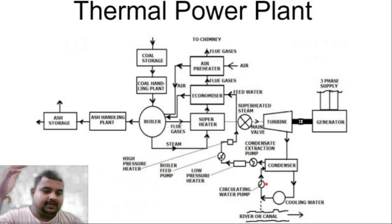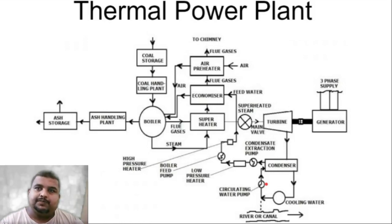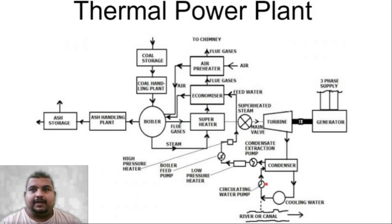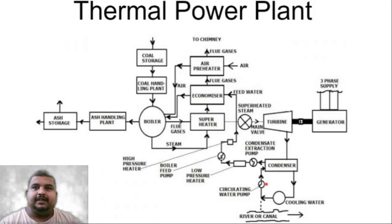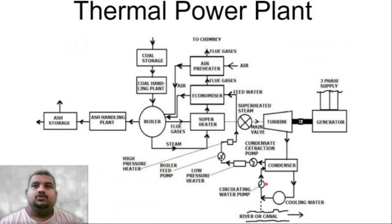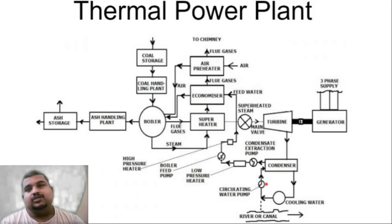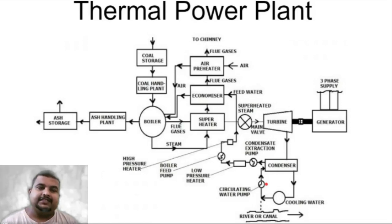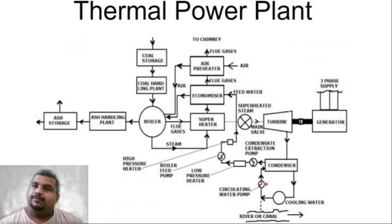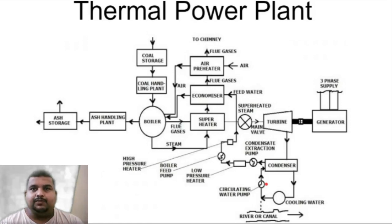There is a condensate extraction pump (CEP). The condensate that has come here is given a little heat — this is done using low pressure steam in the low pressure heater. This heater is also called a heat exchanger, which extracts heat from one fluid and transfers it. After this, the heated water is given to the BFP — the boiler feed pump.